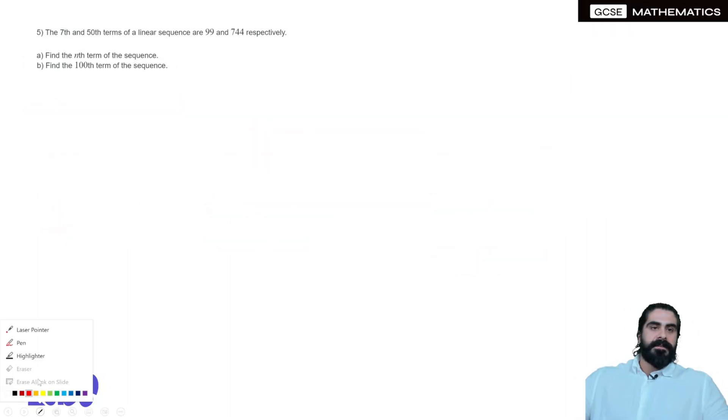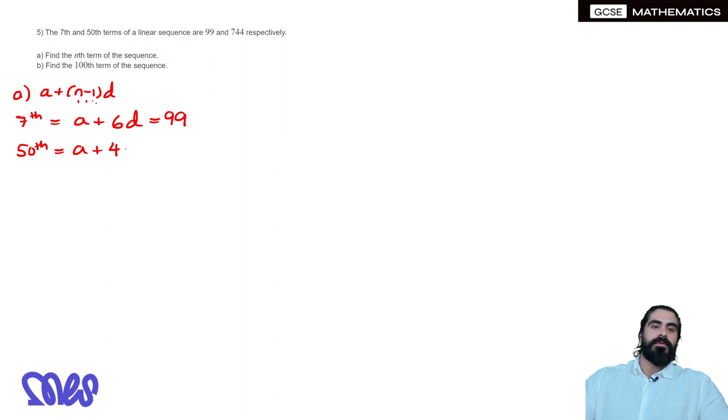The 7th and 50th terms of a linear sequence are 99 and 744, find the nth term. So this is combining both the first two steps of the previous question, so remember, is A plus N minus 1 D. The 7th term, the 7th term will be A plus, now N is 7, so it'll be 7 minus 1, which is 6D, and they're saying that equals 99. Then they're saying the 50th term would be A plus, then it's 50 minus 1, 50 minus 1 is 49, D equals 744.